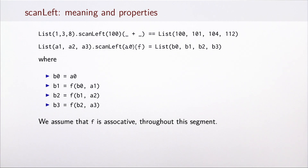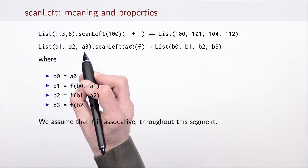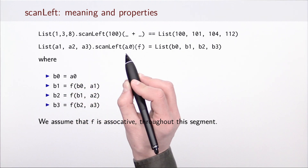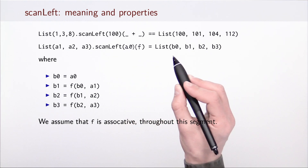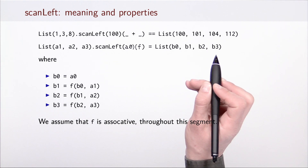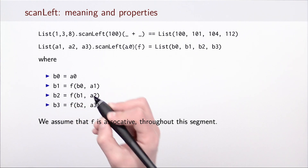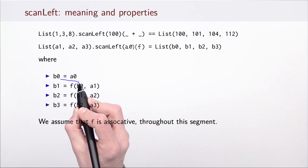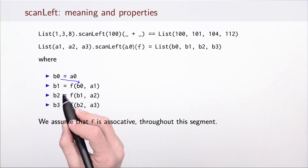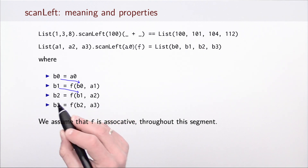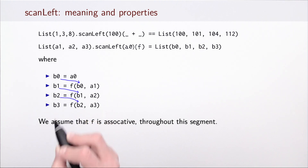More symbolically, given a list consisting of elements a1, a2, and a3, when we apply scan left with initial element a0 and some binary operation f, the result is the list b0, b1, b2, and b3 computed as follows. b0 is just the given initial element. Then b1 is computed by taking b0 and combining it using f with a1. Then we take b1, combine it with a2 to obtain b2. And then we take b2, combine it with a3 to obtain b3.